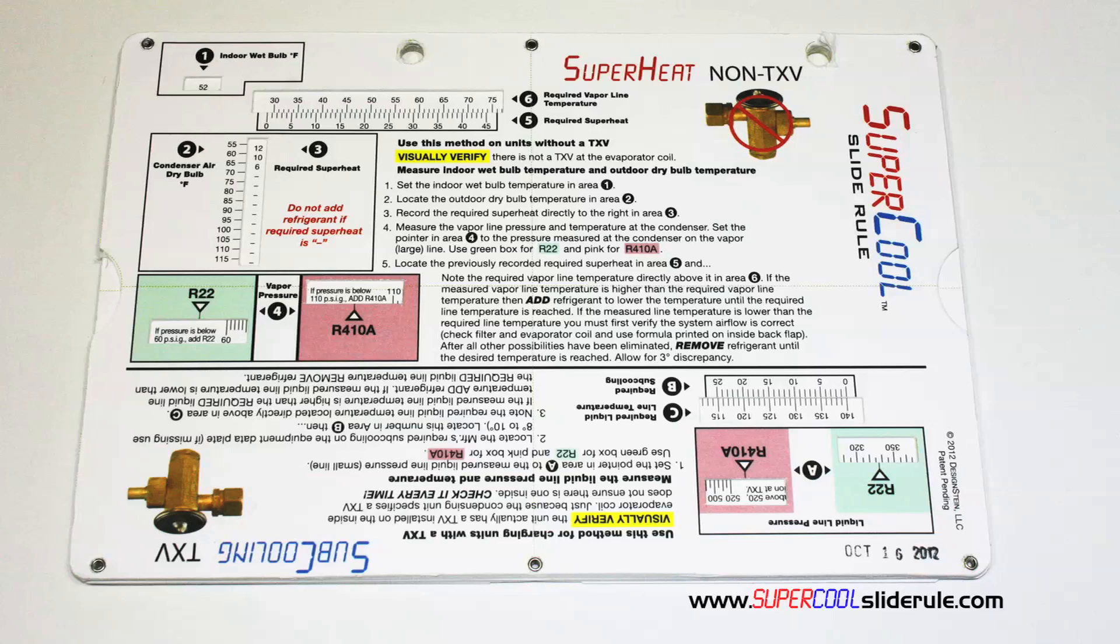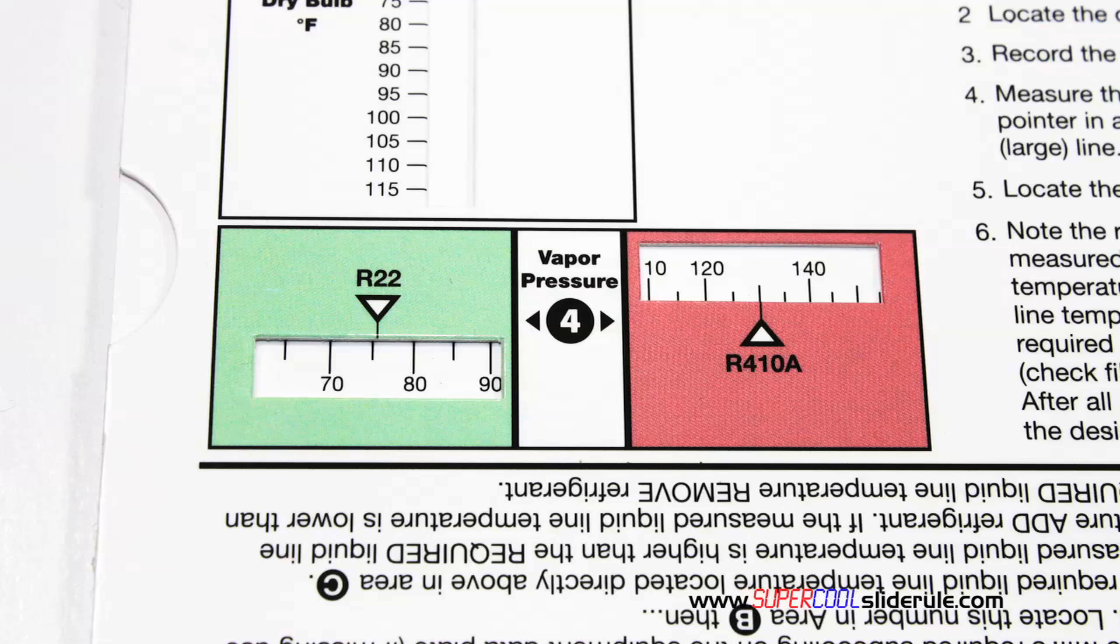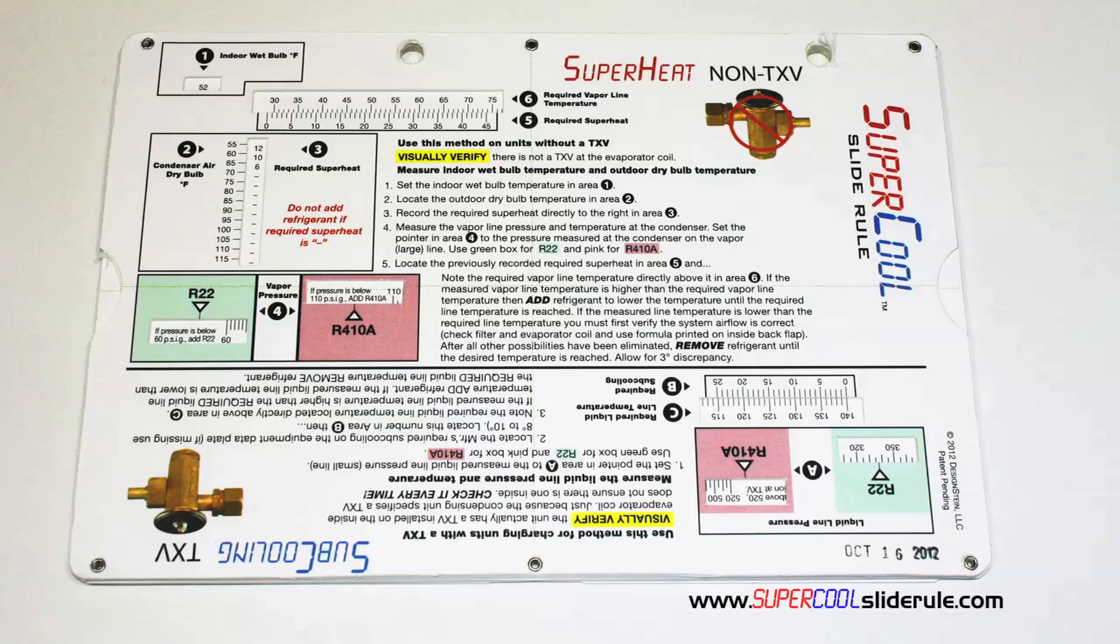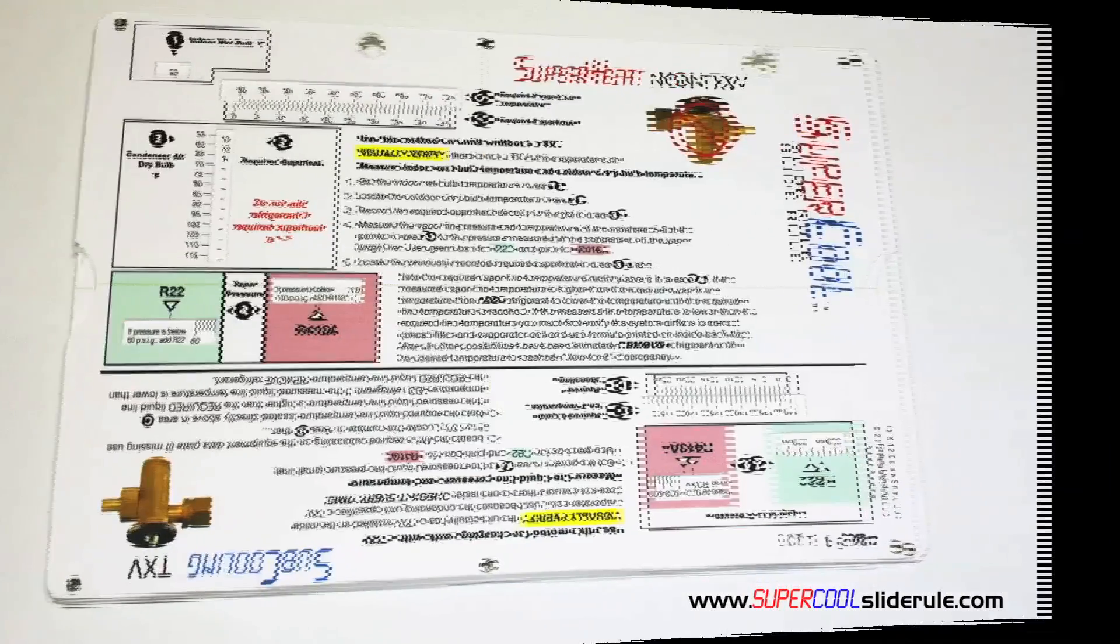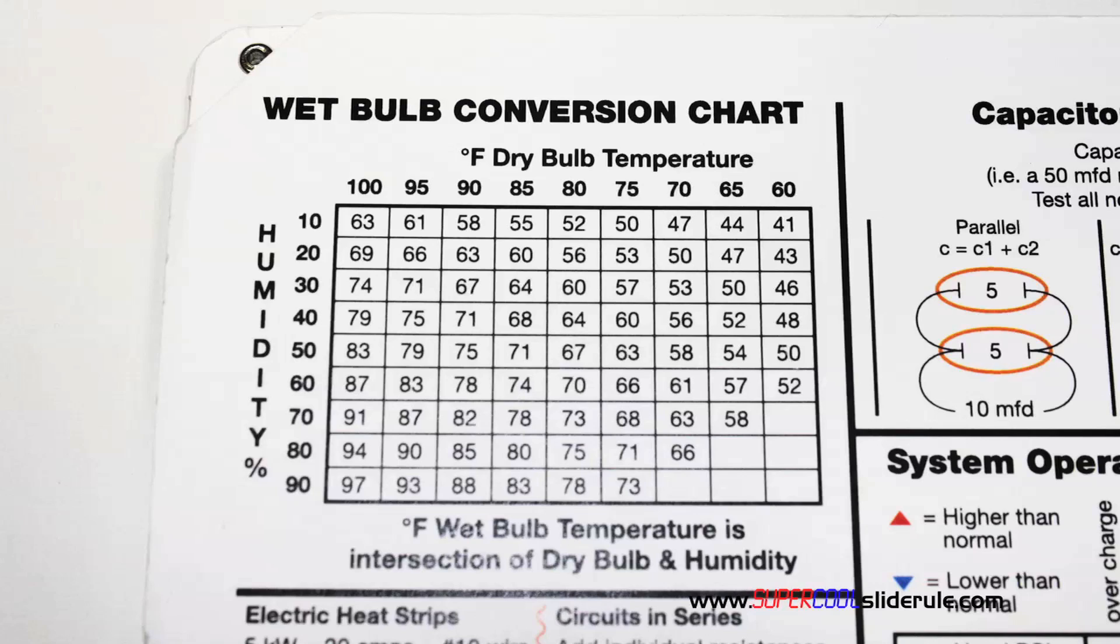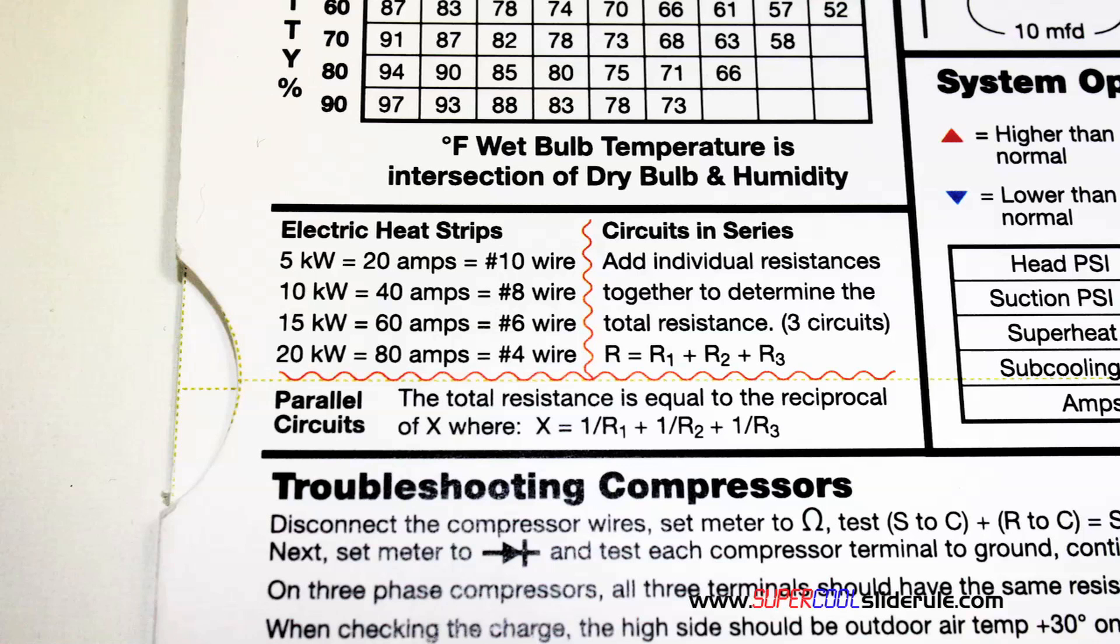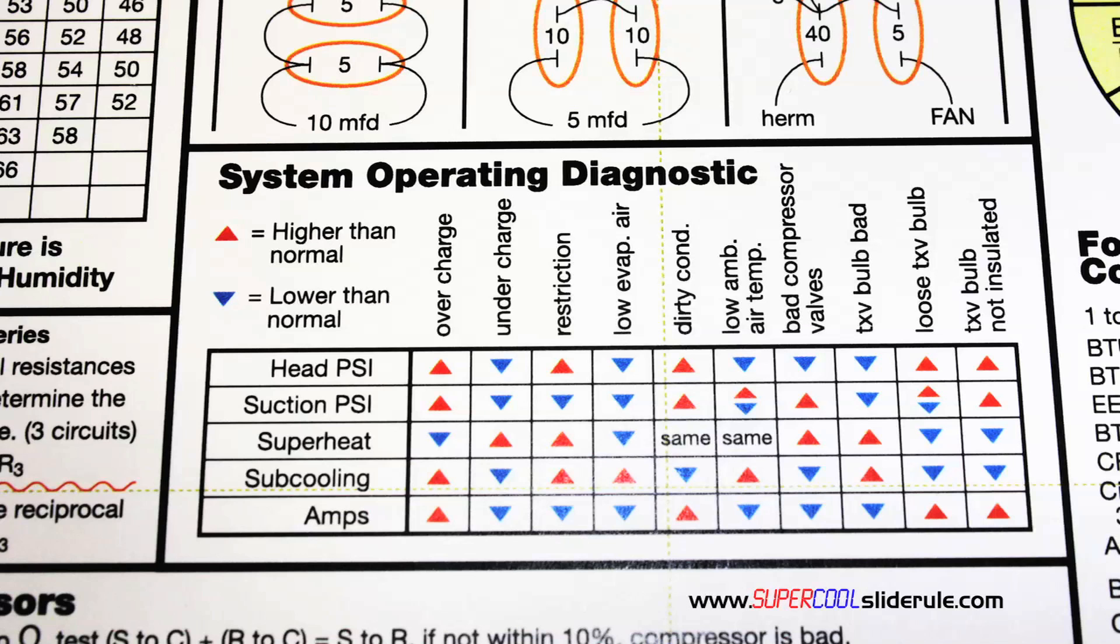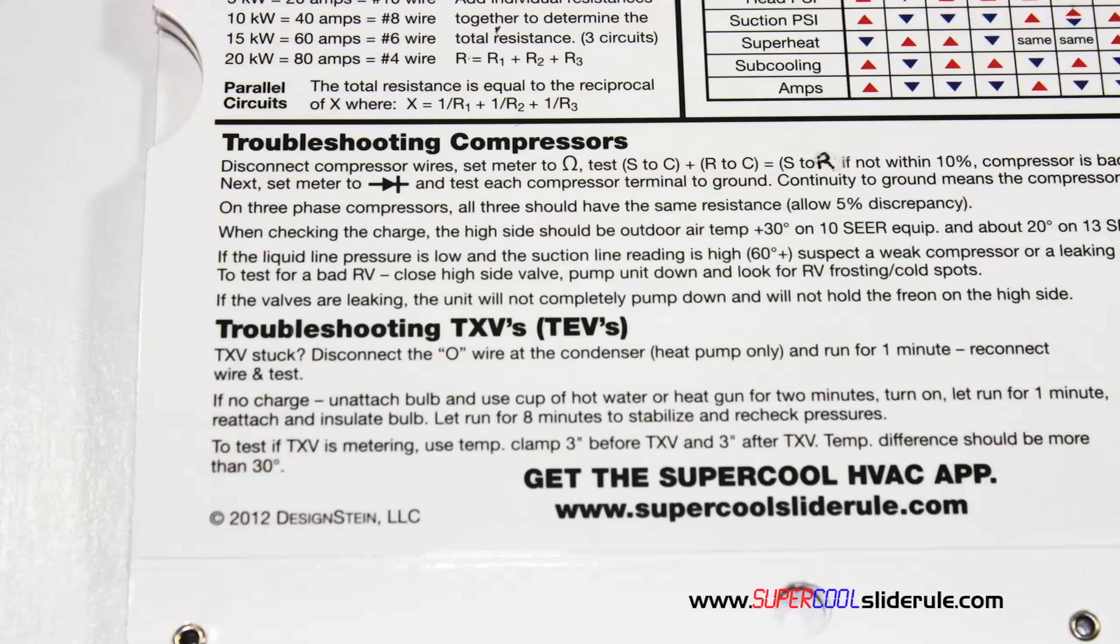This one tool will allow you to charge a system with R-22 or R-410A and either the superheat or subcooling method. The back cover contains required formulas, it has capacitor rules and practices, a wet bulb conversion chart, how to perform computations on series or parallel circuits, an electric heat strip guide, a complete system troubleshooting diagnostic chart, and how to troubleshoot compressors and TXV.